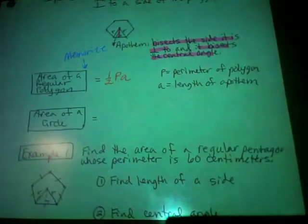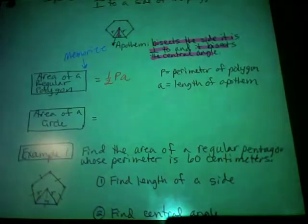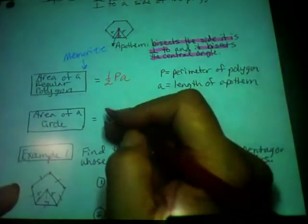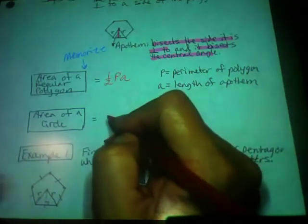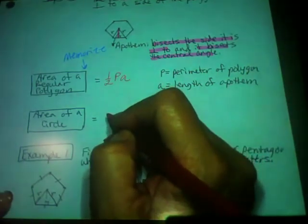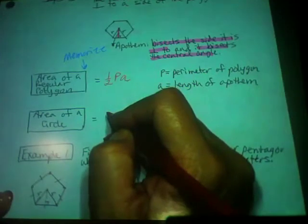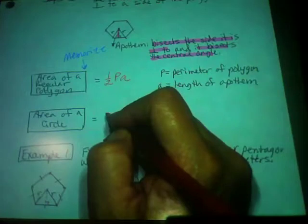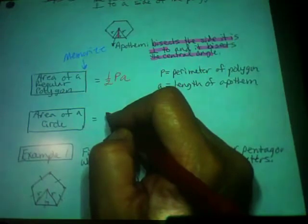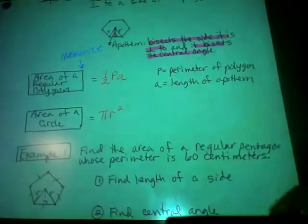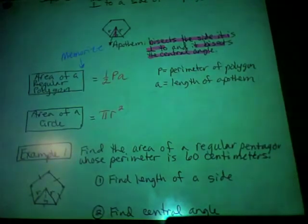You'll also deal with the area of a circle today. The units of area are squared, so the formula is π r² — not 2πr. That formula is on your AIMS reference sheet, so fortunately you don't have to memorize it.